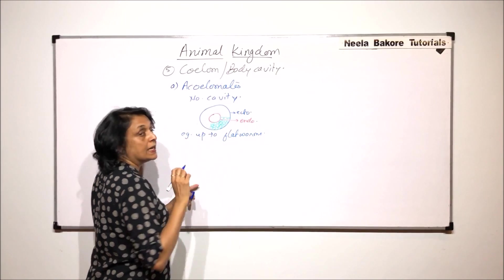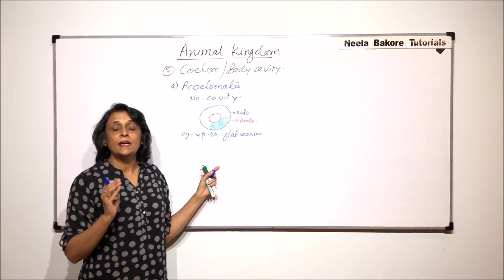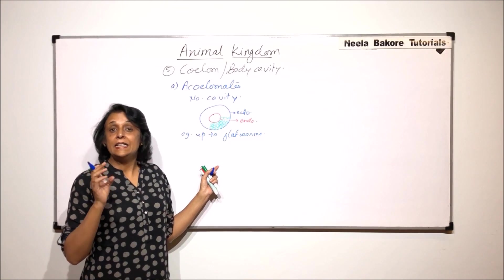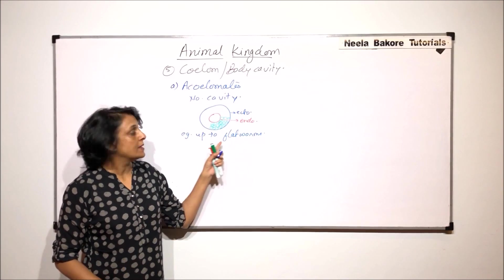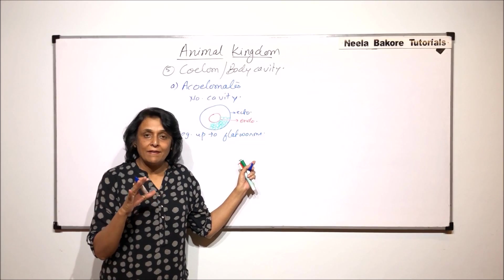That means if we remember the sequence of the phyla, we start with Porifera, then we come to Cnidaria, Ctenophora, and Platyhelminthes. So these phyla are acoelomates, that means there is no body cavity.